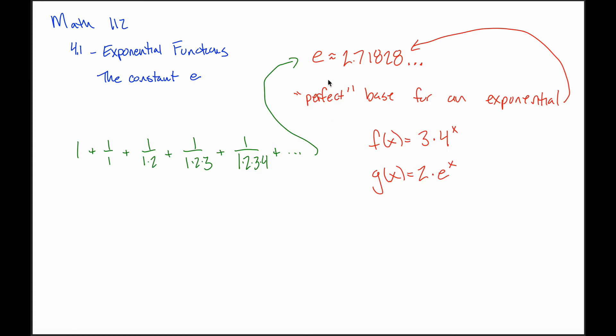All right, another thing about E. Because it shows up in so many different mathematical areas, people that are super smart mathematically kind of have an affinity for this number. And some people that are super smart mathematically will give sort of a shout out to this number. The creators of Google, for example, are a couple such geniuses that have an affinity for this mathematical constant E.